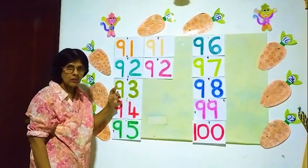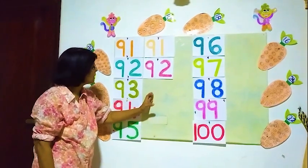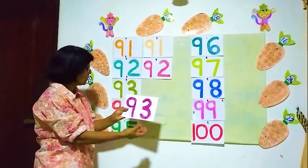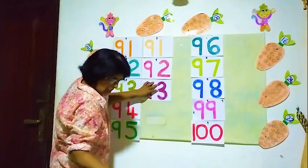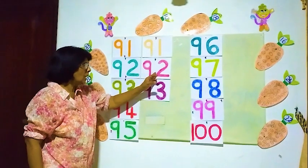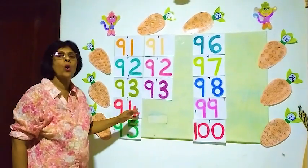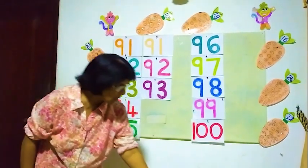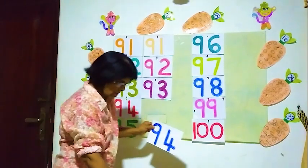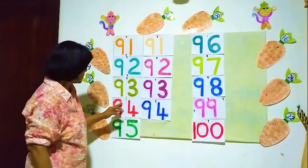Here another number. 93 — 2 numbers are here: 93 and 93. Here 92 and 92, 91 and 91. Now the next number is 94: 9 and 4. Here number 94, I am going to place it — 94 and 94.